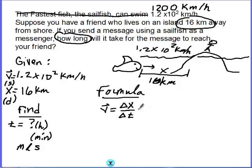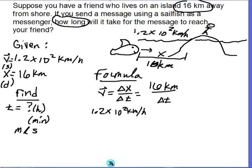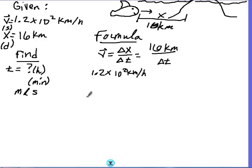So distance divided by time gives me this velocity. So I just plug in my givens here. Delta X or X 16 kilometers. And my V is 1.2 times 10 to the second kilometers per hour. What I need to do is find time. So I'm finding time, I have to rearrange my equation to solve for time.